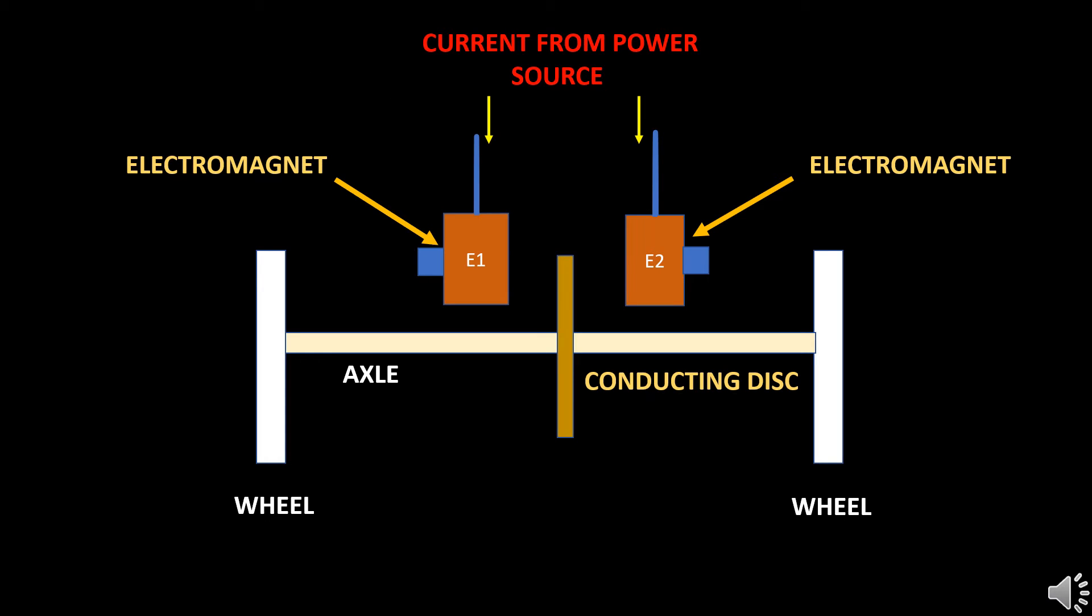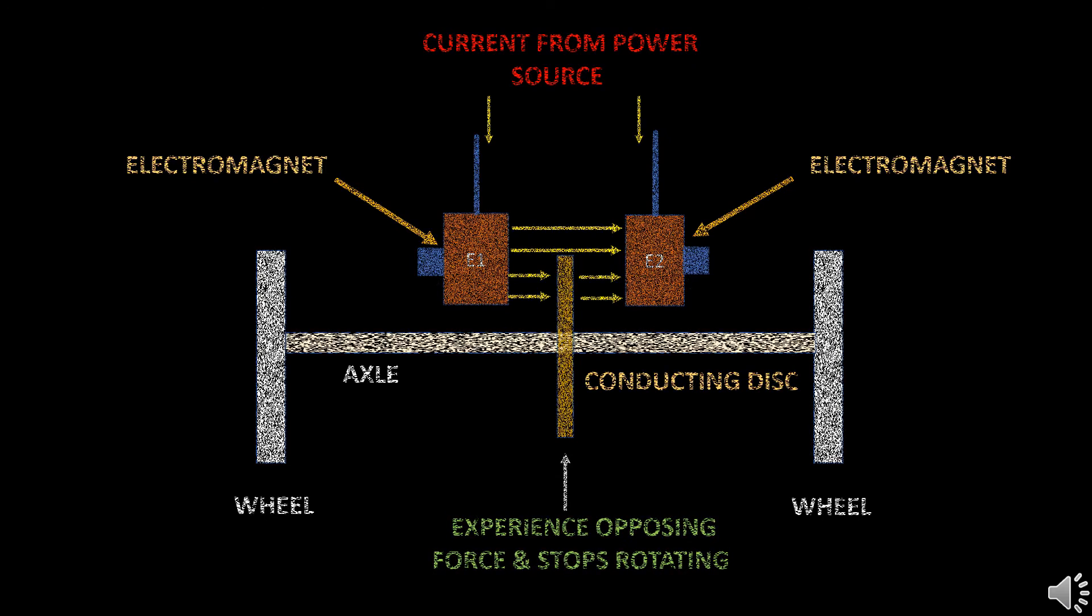Let's take a closer look at the braking system. The train wheels are connected with an axle. A metallic conducting disc is attached at the center of the axle. This disc rotates along with the wheel and axle of the train. The electromagnets are present on both sides of the disc. When the loco pilot applies the brakes, the electromagnets get activated. This creates the main magnetic field. The disc is now rotating in a magnetic field which induces eddy current in the disc. This eddy current by Lenz's law produces an opposing magnetic field which slows down the rotating disc and stops it. This in turn stops the wheels.